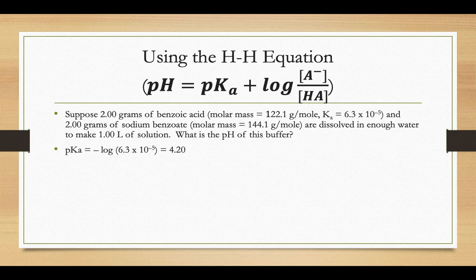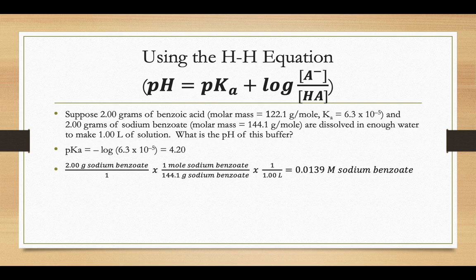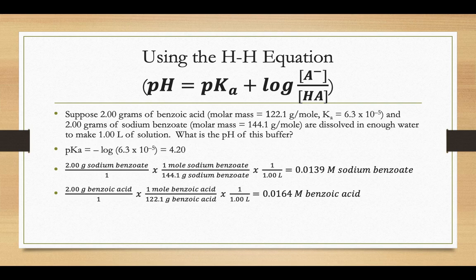Now, we need to figure out what the molarities of that A minus and HA are, so we could plug them into the equation. So by switching those grams of sodium benzoate into moles, and it says we're going to dissolve it in enough water to make 1 liter of solution, we could get the molarity of the sodium benzoate. We could get the molarity of the benzoic acid in the same way. So now we know the molarity of the benzoate ion. That would be the conjugate base of our weak acid benzoic acid.